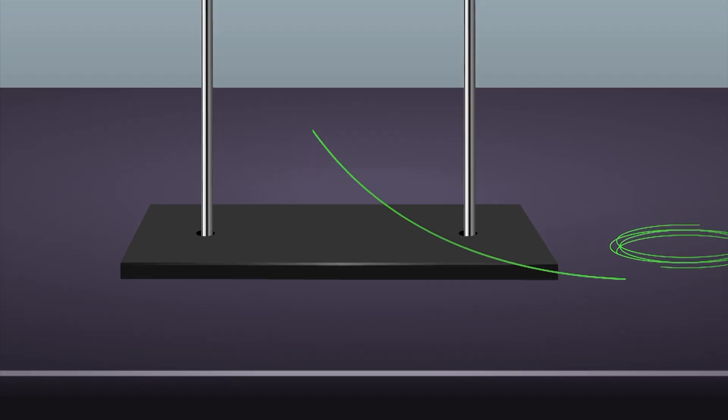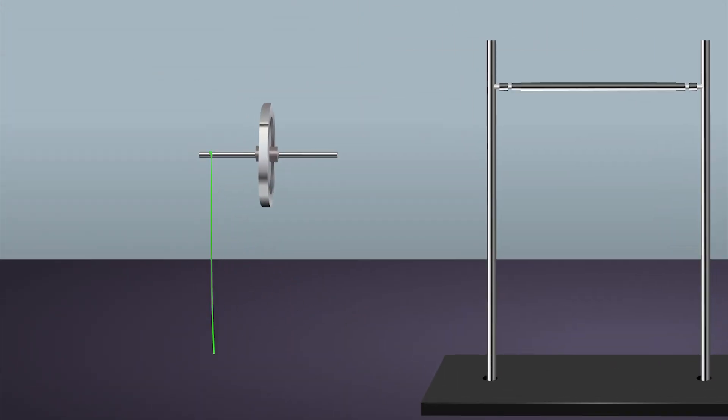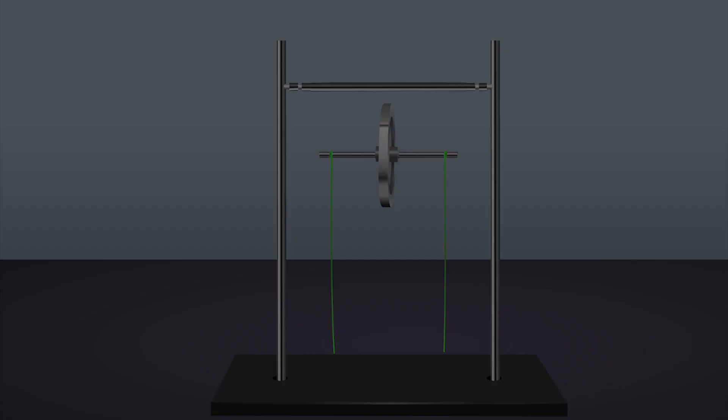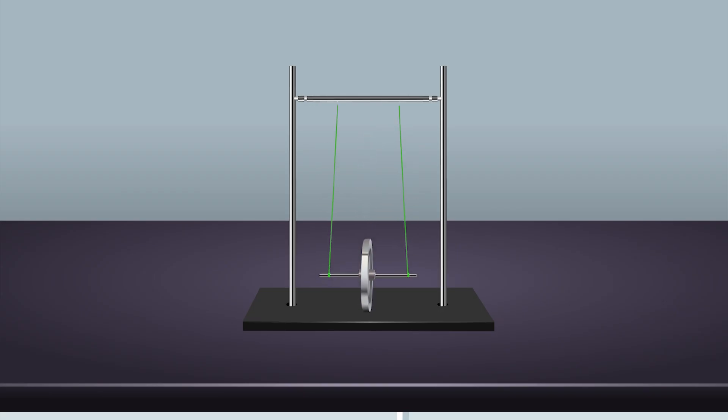Take two threads and tie them on each side of the axle which is connected to the wheel. Note that the threads should be quite flexible, inextensible, and identical to each other. Tie the other end of the threads to the rod at an equal distance from the center.